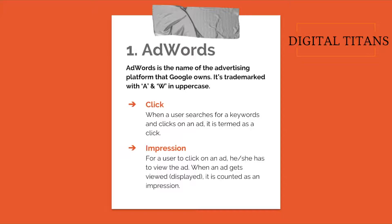Let's start with the term 'click.' When you search for something on Google, you see ads and free listings. When a user clicks on an ad, the AdWords system captures and registers that as a click, which shows up in reports. For a user to click on an ad, they must first see it. When you enter a search term and Google displays ads, the moment an ad is displayed it is called an impression.